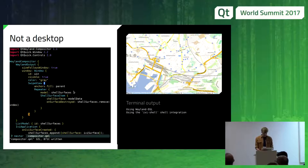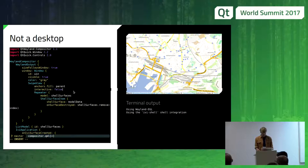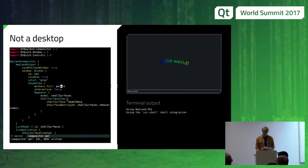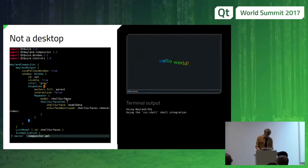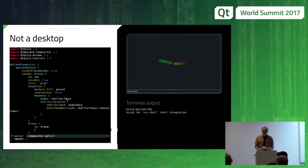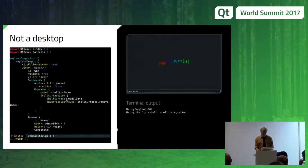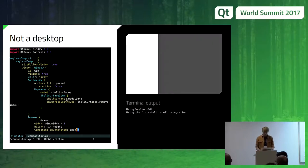The first thing we'll do is set interactive to false on the swipe view to disable switching. Then we'll use another Qt Quick item — I'll give it an ID called 'drawer' — and let it take a third of the screen width and the entire height. Just to make things easier, we'll make sure it opens automatically when we launch the compositor. It's there, but there's no content in it yet.